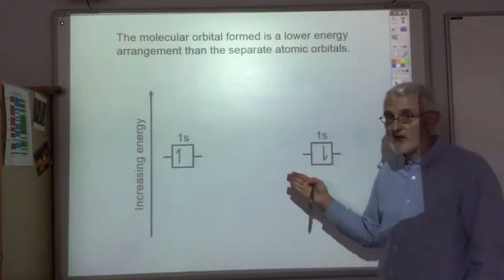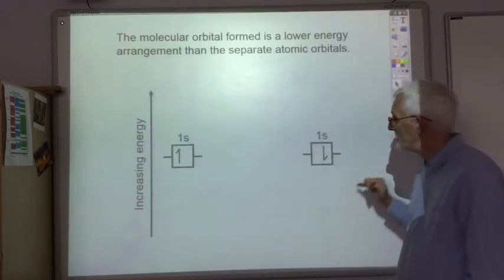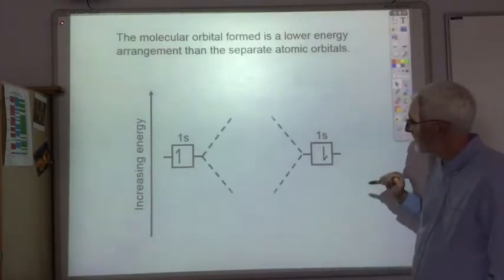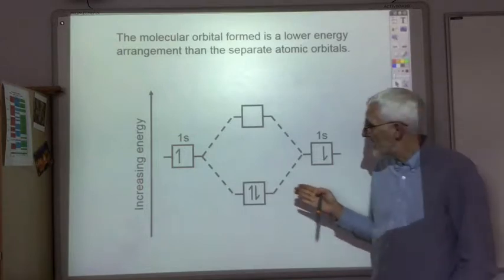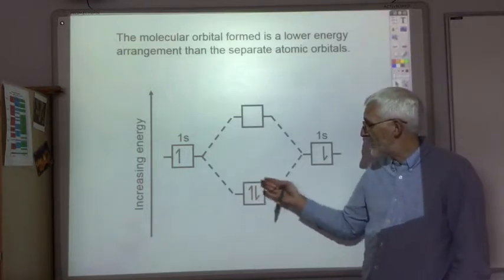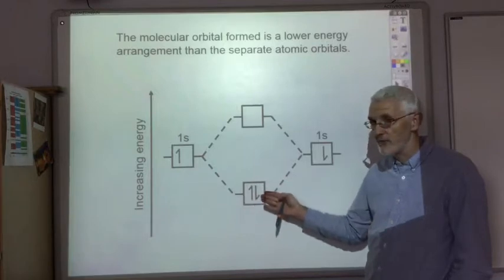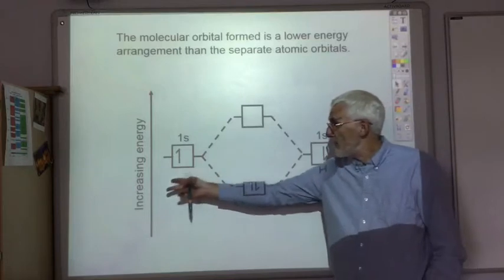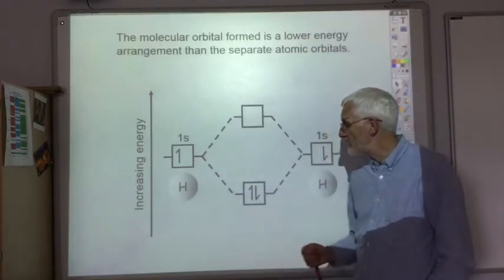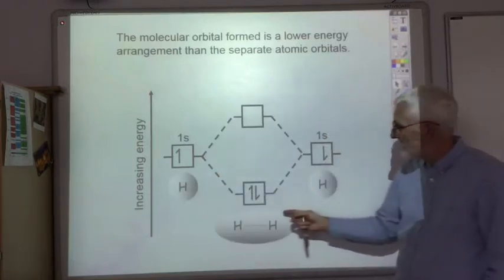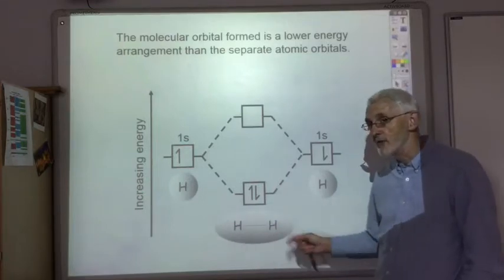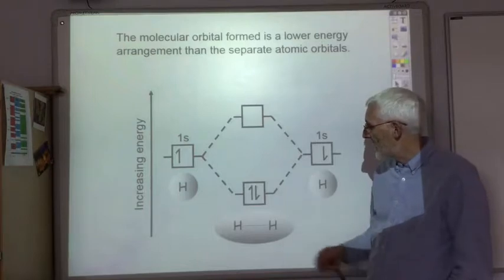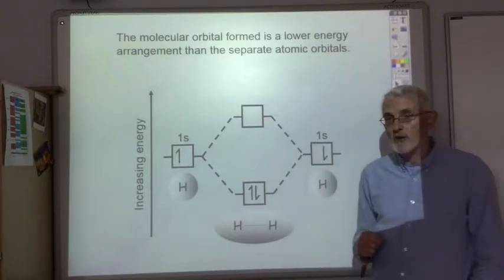If you show that in this energy diagram for hydrogen — so that's one hydrogen atom there, one hydrogen atom there — this box here represents the lower energy molecular orbital of the H2 molecule. That was the shape of the atomic orbital for the hydrogen atom, and that's the shape of the molecular orbital for the hydrogen molecule. It is of lower energy than the atomic orbitals.